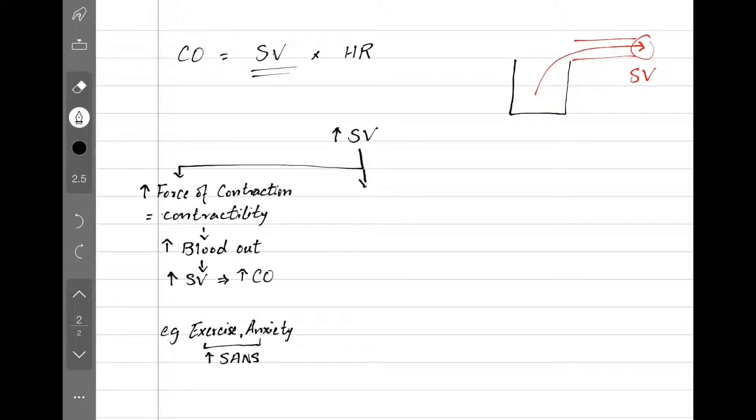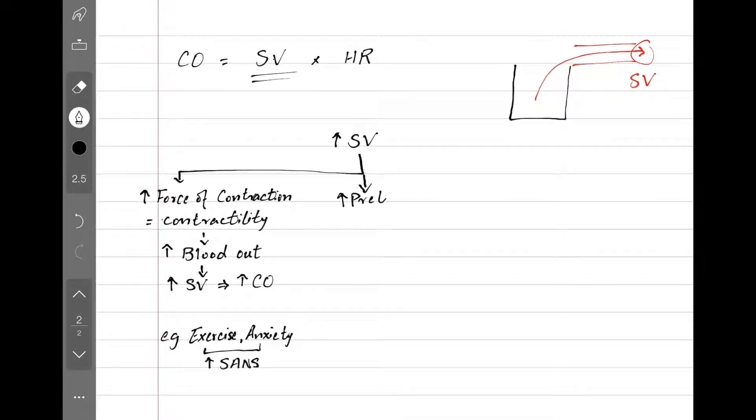Another way to increase stroke volume is by increasing preload, which really means we are having more blood coming into the heart. As a result, we pump out more blood, stroke volume goes up, and so does cardiac output. This is seen in early pregnancy or giving someone normal saline, both of which result in increased plasma volume.